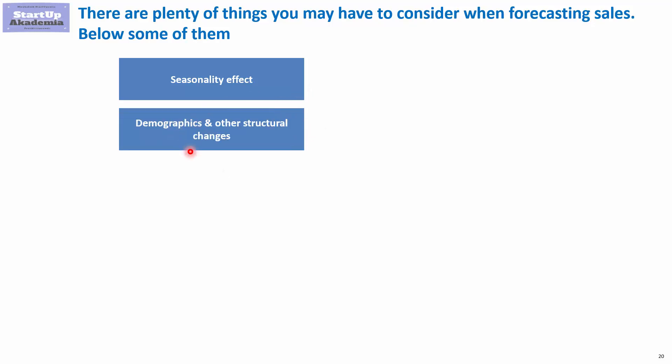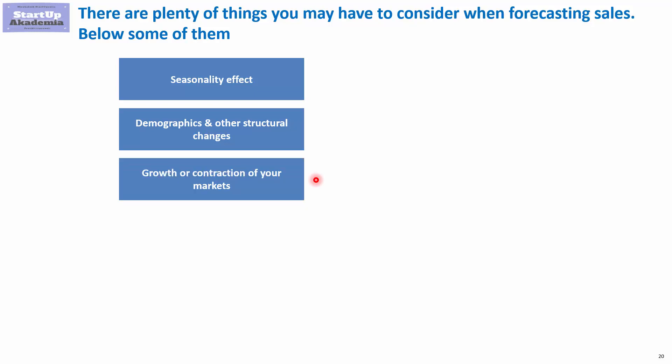On top of that, you should also take into account demographics and other structural changes. If your customer group is getting smaller due to changes in age, this will have a huge impact on sales. There may also be other structural changes, for example due to a market reaching saturation point. You should check whether your market is growing or contracting before you start predicting sales for your product.